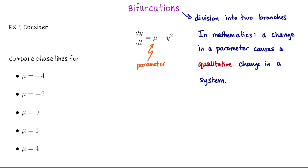We'll take our conclusions and organize them in something called a bifurcation diagram. And then once we look at a bifurcation diagram, you'll see why this definition of division into two branches makes sense — why we use this word bifurcation to study how adjusting a parameter might affect a differential equation. So what we're going to do is take this differential equation and create phase lines for five different values of mu.